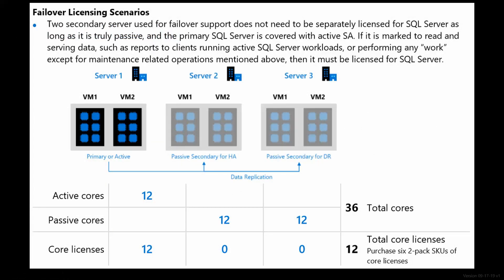Here we get to the meat of the presentation. In this slide, all three servers are on premises, as indicated by the little buildings. You have your active set of VMs, and you do not pay for your secondary one — that's always been the case. But you also get a passive secondary for DR too. So you can be replicating via log shipping, transactional replication, or always on availability groups. You've got two complete backups standing by, but you're only paying for the first one. You've got 12 active cores here, and you're not paying for the HA passive or the DR passive either — 36 total cores, only paying for the first 12.